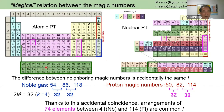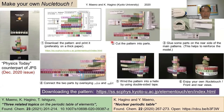Thanks to this coincidence, 74 out of 118 elements — from niobium to flerovium (element 114) — are arranged identically between the atomic and nuclear periodic tables. For example, the f-block lanthanides and actinides reproduce exactly, and niobium, tantalum, and dubnium appear in the same column in both tables. The atomic and nuclear periodic tables accidentally have very similar arrangements.